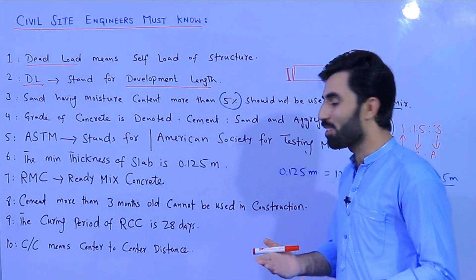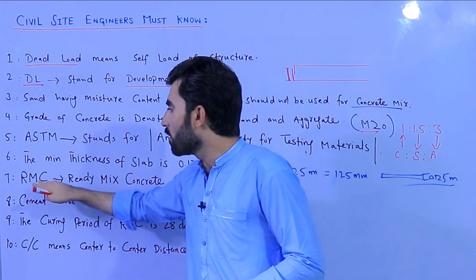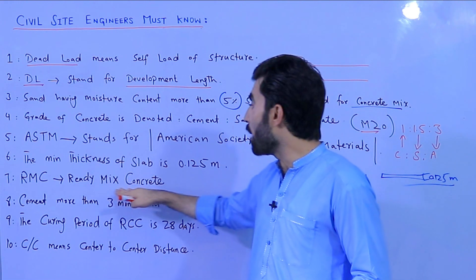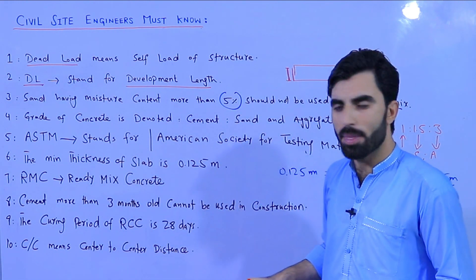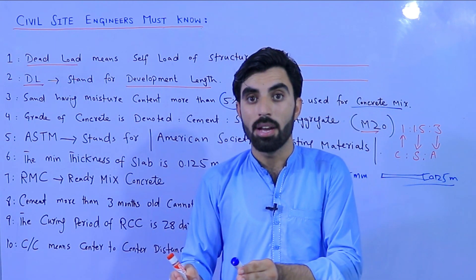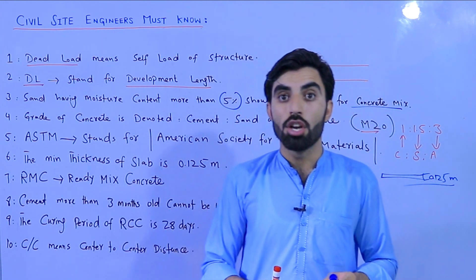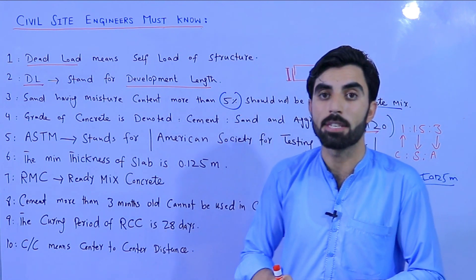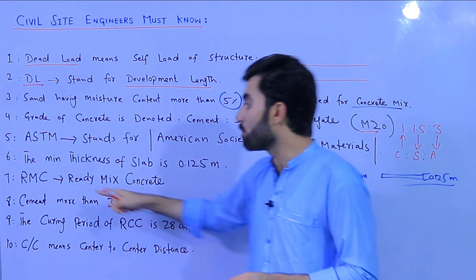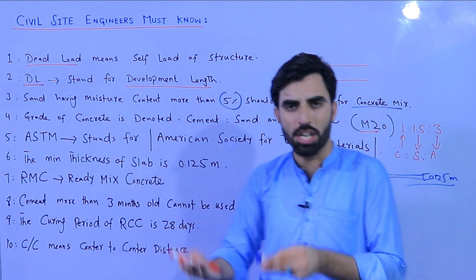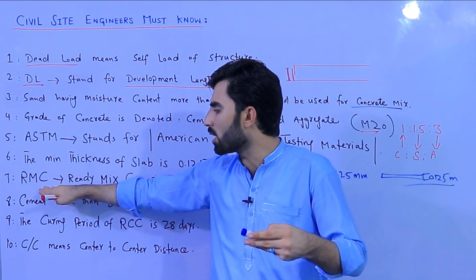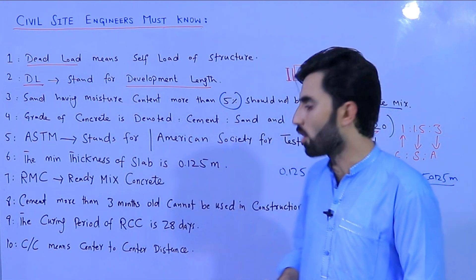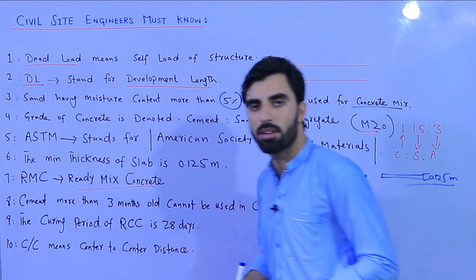The seventh point: we should bring RMC for large construction projects. RMC stands for Ready Mix Concrete. We bring ready mix concrete from a factory when we have a huge project requiring a large amount of concrete that cannot be practically mixed on site. The factory transports the RMC to the construction site by vehicle.